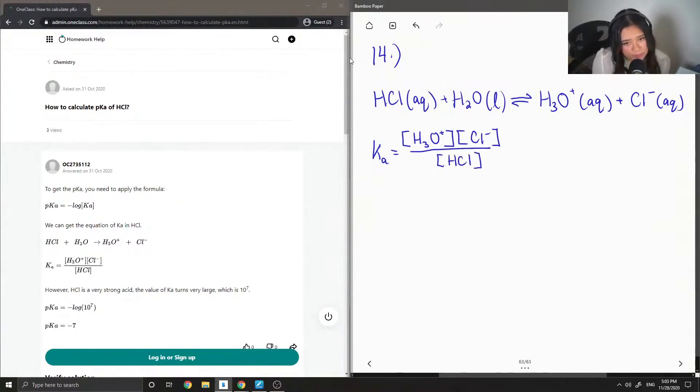So typically the concentration of HCl is given, and once we know that concentration, since everything is one to one, we just plug it in to calculate the Ka value. We want the Ka value because